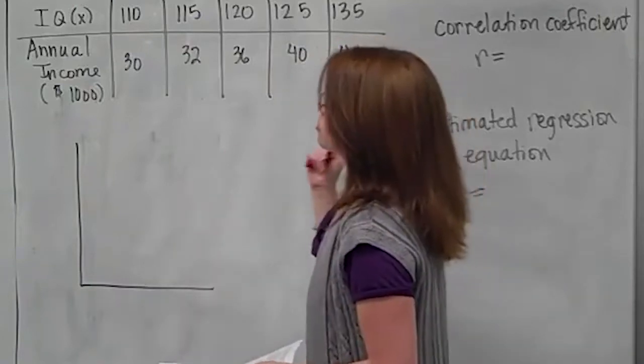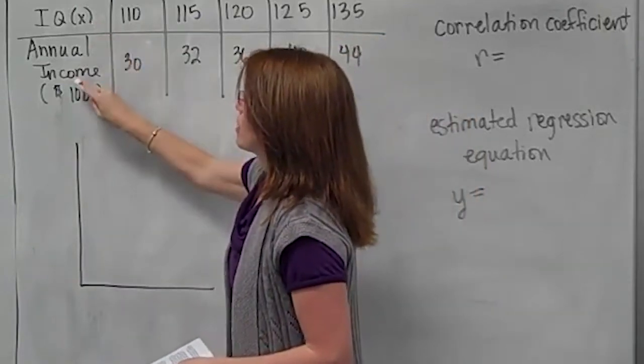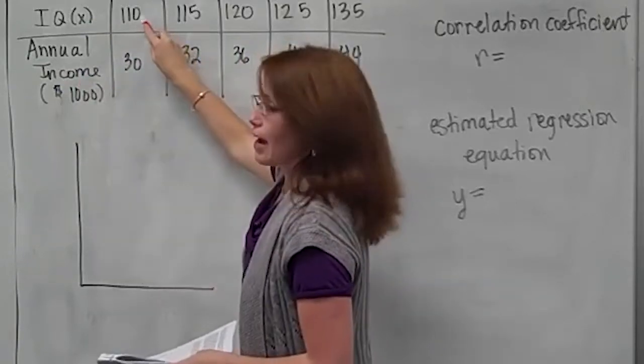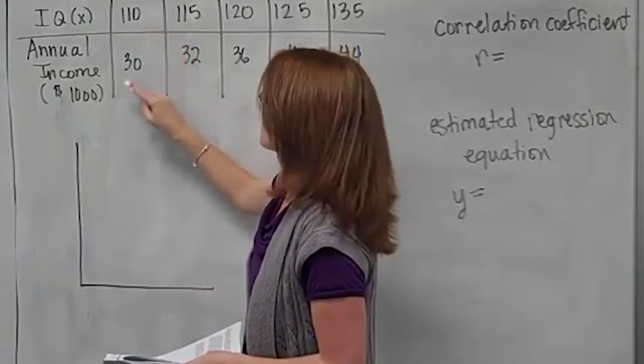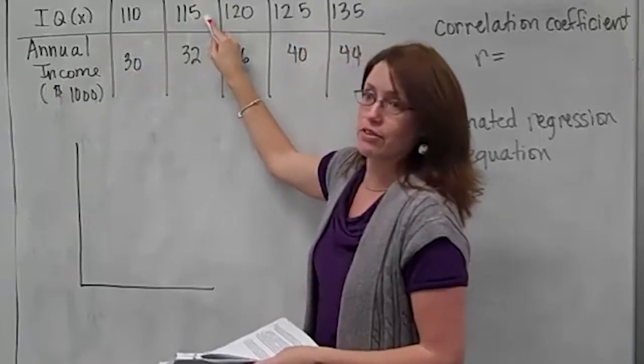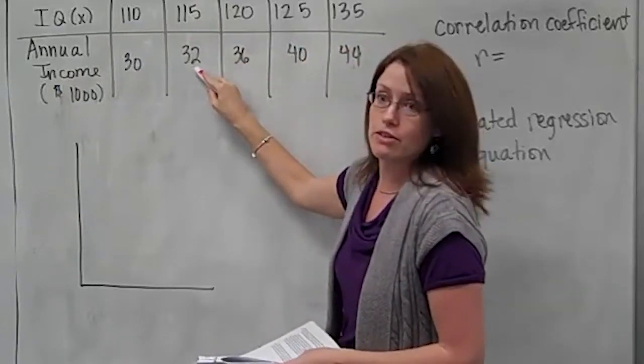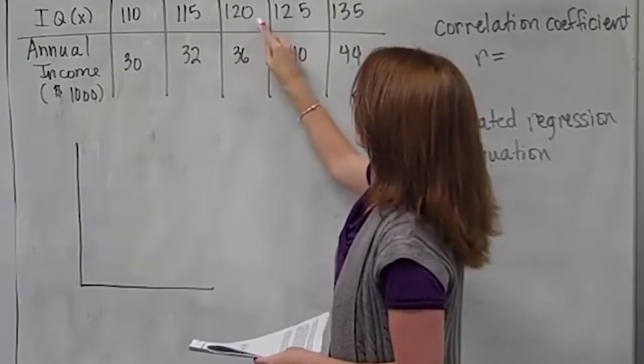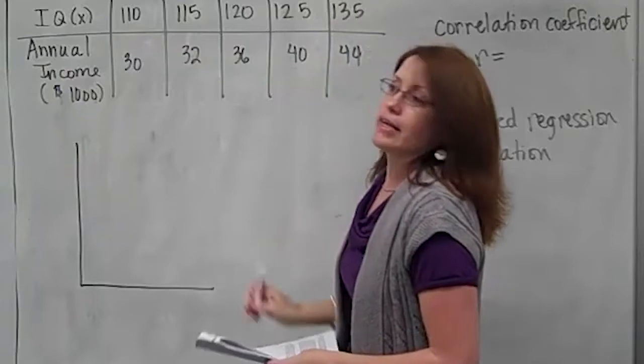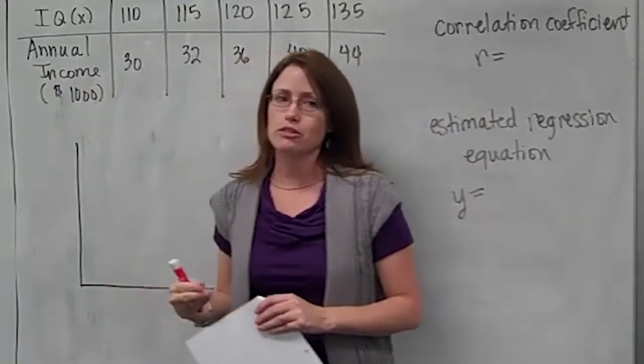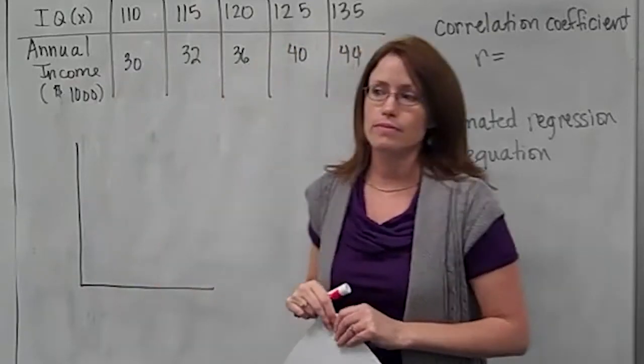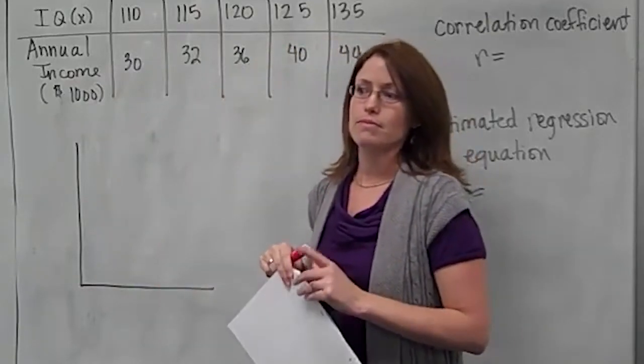We went up and surveyed some people and said, what was your IQ, and what was your annual income in thousands of dollars? Someone said, I have an IQ of 110, and I make $30,000 a year. Then we have three more people with their IQs and how much they made. Why would we be interested in the relationship between IQ and annual income? To see if the higher IQ has an effect on their income. Very good.